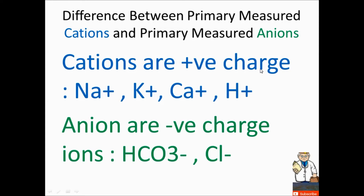Cations are positively charged ions like sodium, potassium, calcium, and hydrogen ions. Anions are negatively charged ions like bicarbonate and chloride ions.